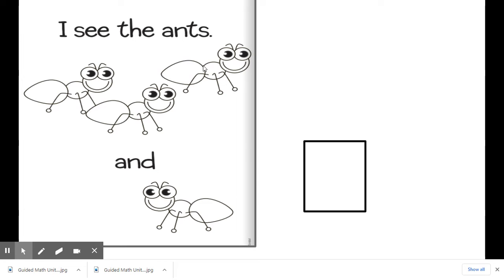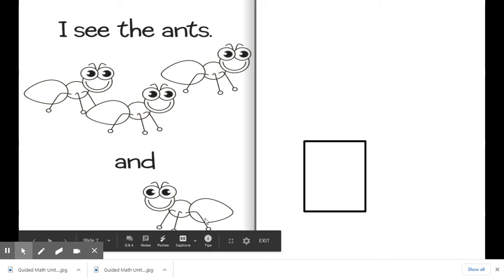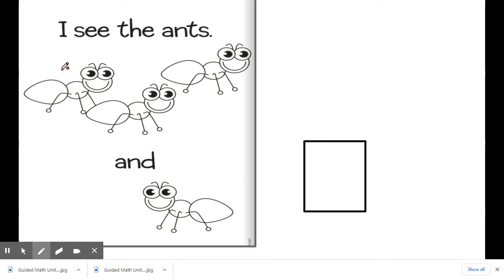So there are a group of ants here and a group of ants here. Now the way that you find the total or how many are all together is you count them all together. And we're going to do that by counting and labeling. Ready? Let's do that now. One, two, three, and four. So how many ants are there in total? There's four. I'm going to write four here.